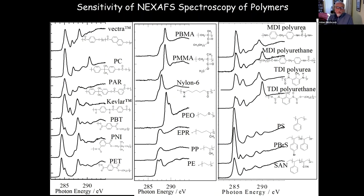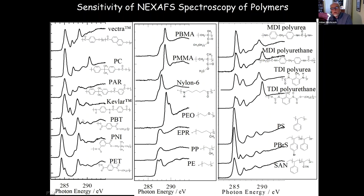A final example of spectroscopic potential for soft X-rays is a set of spectra measured by Urquhart and Ade at NSLS. Small changes in material structure—for example various phenyl-based materials—produce dominant features like the 285.8 eV feature indicating a benzene ring, but very small changes in other components give changes at higher energies allowing you to differentiate all these species.